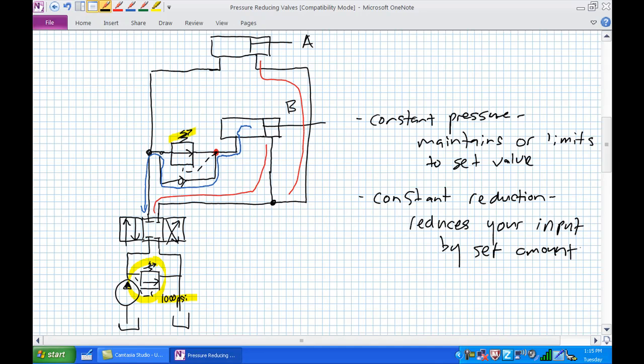Basically, it reduces your input by whatever set amount. So let's say we've got a constant reduction pressure reducing valve that reduces by 200 PSI. Let's say, for example, 200 PSI, and you've got 1,000 PSI input. Well, the outlet would be 800 PSI. Same valve with an inlet of 1,200 PSI, you would have an outlet of 1,000 PSI. Whereas this guy, if we set it at 500, regardless of the input, we should ideally see 500 PSI at its output. So just two different flavors of our pressure reducing valve.